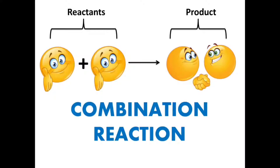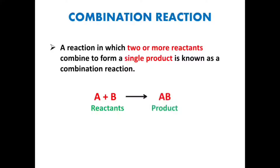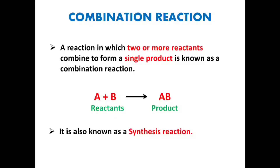A reaction in which two or more reactants combine to form a single product is known as a combination reaction. Here A and B are the two reactants which react to form AB as the product — two reactants and one product. Combination reactions are also known as synthesis reactions, because the reactants are reacting to form a new product; in other words, we are synthesizing a new product.